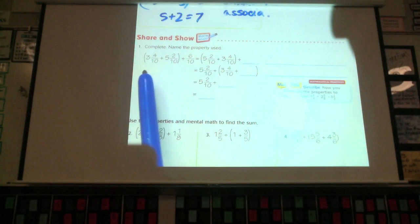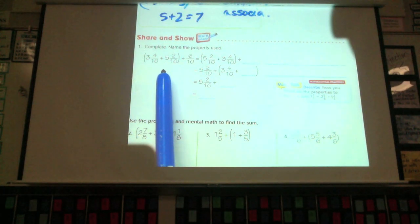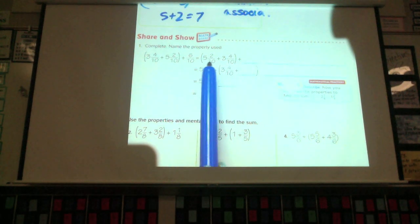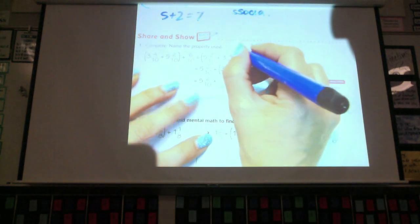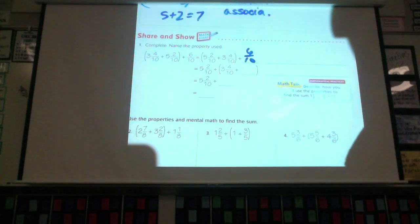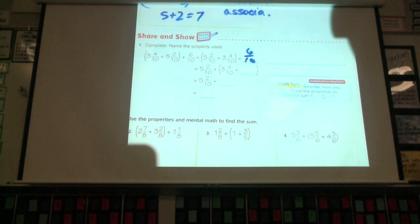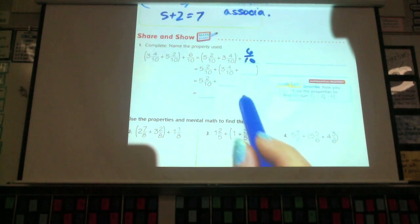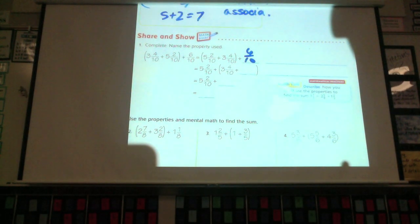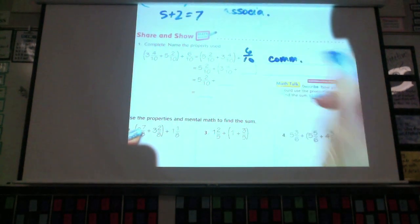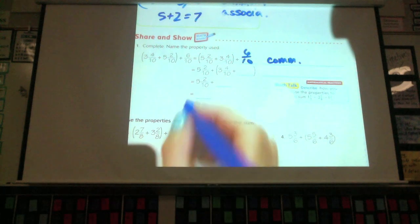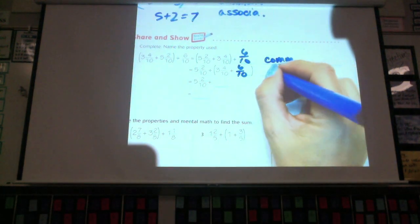So, we have 3 and 4 tenths plus 5 and 2 tenths plus 6 tenths. We're going to change it to 5 and 2 tenths plus 3 and 4 tenths plus 6 tenths. Which property am I using to, wait, wait, wait, wait. Oh, yeah, I get it. Which property did I use to make the change? Andy. Associative? No, I haven't regrouped them yet. They're still grouped. I just changed the order, so that's the commutative one. Okay. Now, I'm going to regroup them. So, that's the associative.